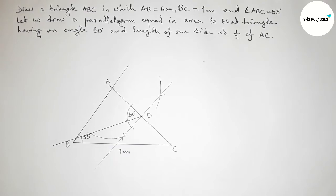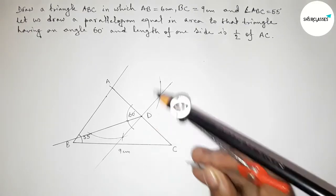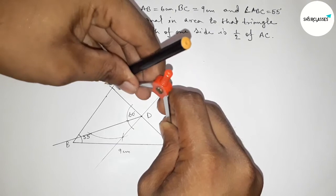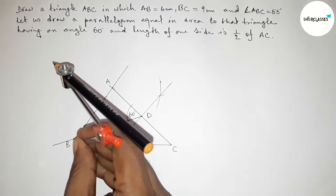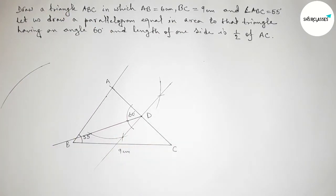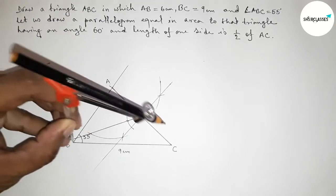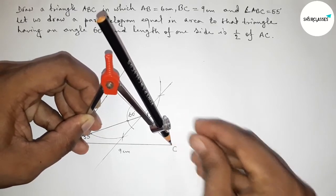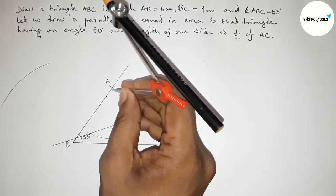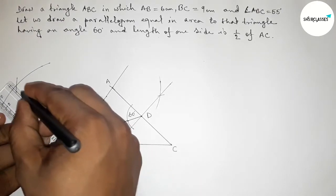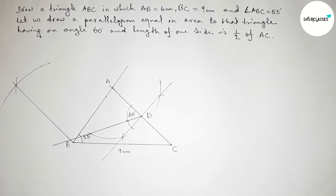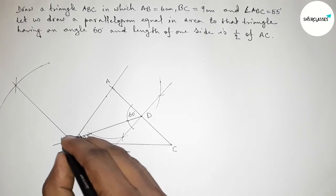Now we draw a line parallel to AC at point B. Taking the length of AC with the compass, we put the compass on point B and draw an arc. Then taking the length of BC with the compass, we put it on point A and cut the arc. Joining this line gives a line parallel to AC, and we label the intersection point E.